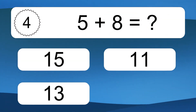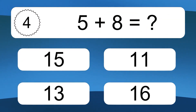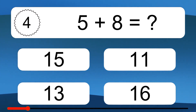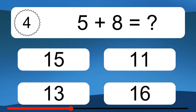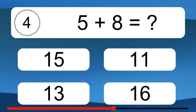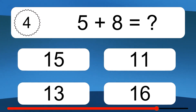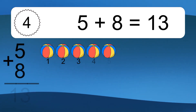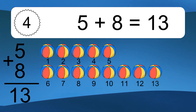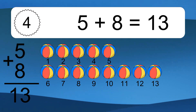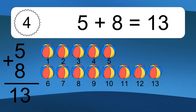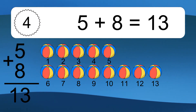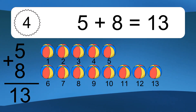5 plus 8 equals what? 5 plus 8 equals 13. Let's count it: 1, 2, 3, 4, 5, 6, 7, 8, 9, 10, 11, 12, 13.